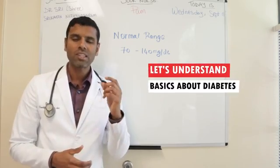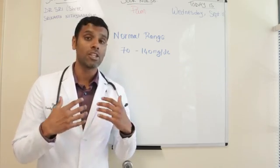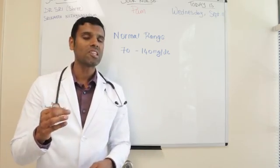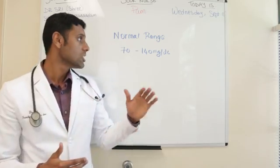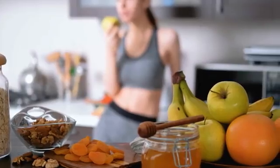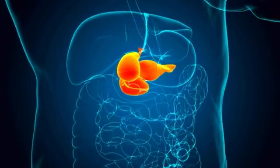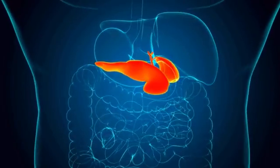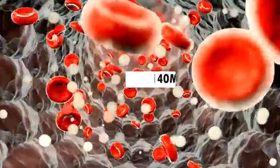Before we go further, let's understand some basics about diabetes. Our blood sugar tries to stay in the normal range between 70 to 140 milligrams per deciliter at all times. There might be slight spikes after we eat a meal, but most of the time our blood sugars should stay within this range. After eating, or sometimes during stress, blood sugar levels spike, and the pancreas detects these rises and releases insulin to normalize blood sugar levels.